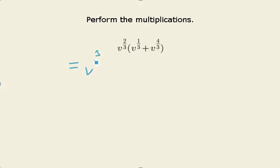So I'll take v to the two-thirds times v to the one-third. And then I'll take v to the two-thirds times v to the four-thirds, and then I'll go ahead and add them.